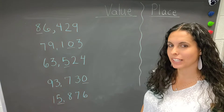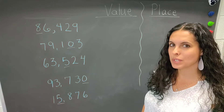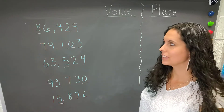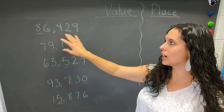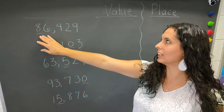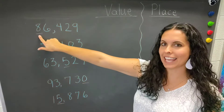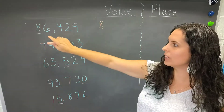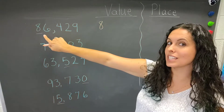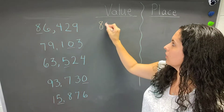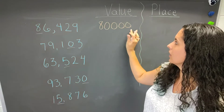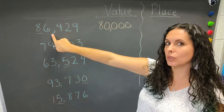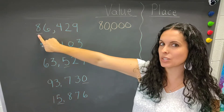Now we're going to talk about the difference between place and value with numbers up to the ten-thousands place. For these numbers, we're going to look at the number that is underlined. The first number is eighty-six thousand, four-hundred-twenty-nine. The eight is underlined. What is the value of the eight? We take the eight and count how many other places need to go to zeros — one, two, three, four. Make sure we put a comma in the right spot, and we have eighty-thousand as our value, because the eight is in the ten-thousands place.